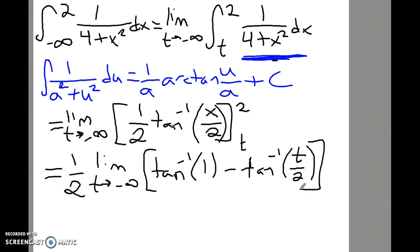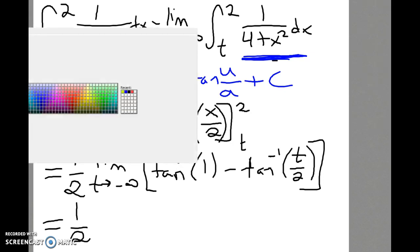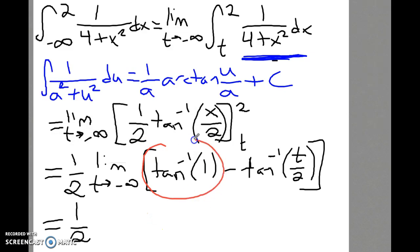Now inverse tangent of 1. With that, you work backwards. You want the value between negative pi over 2 and pi over 2, that's our restricted range for inverse tangent. The value of theta for which tangent of theta is equal to 1. When is the value of tangent 1 between negative pi over 2 and pi over 2? The answer is pi over 4.